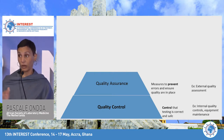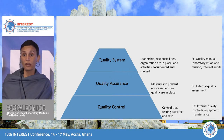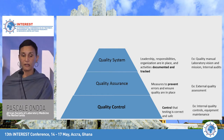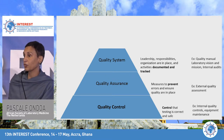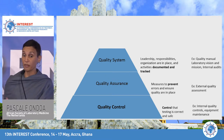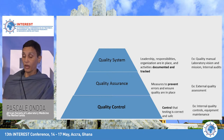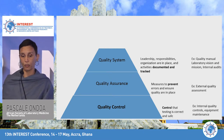External quality assessment is part of quality assurance. Then you have the quality system, where leadership, responsibilities, and organizations are in place, everything is documented and tracked. For a lab, that means having a quality manual in place and conducting internal audits to check your processes.